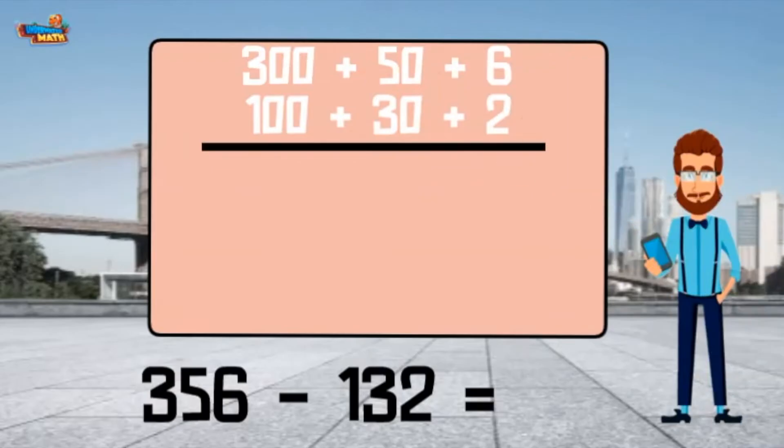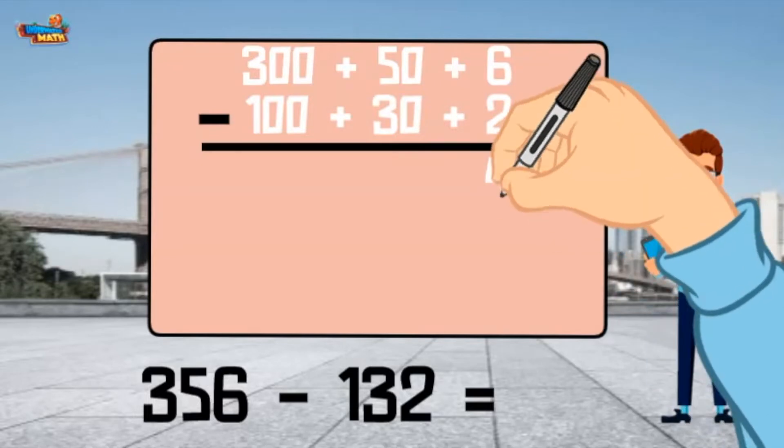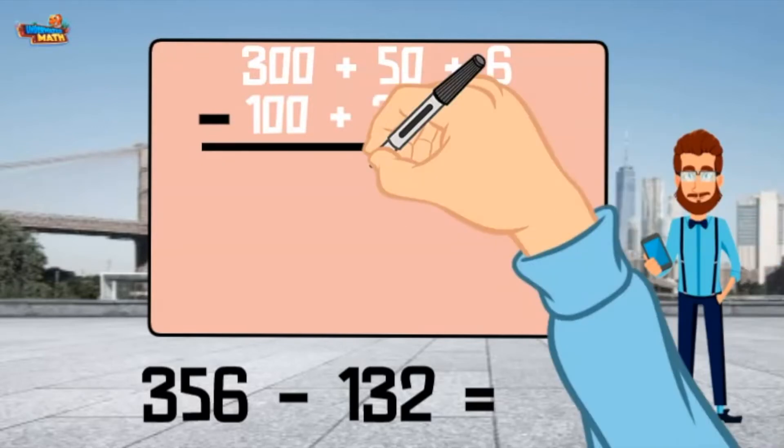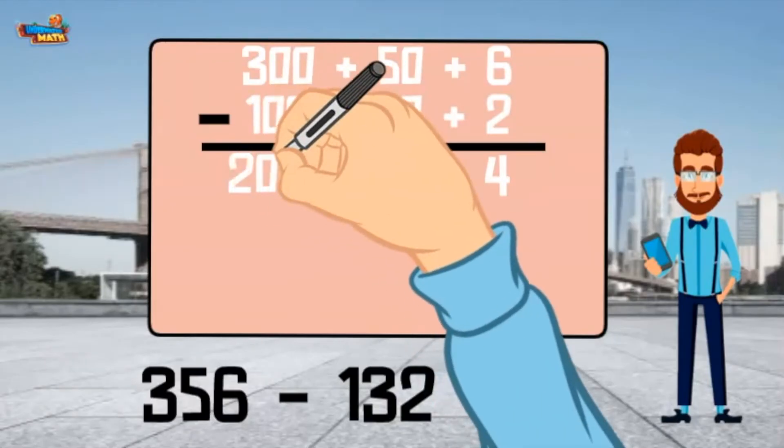I am subtracting so I will subtract the values in each column starting in the ones place. 6 minus 2 equals 4. 50 minus 30 equals 20. 300 minus 100 equals 200.